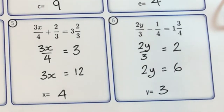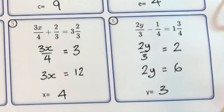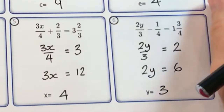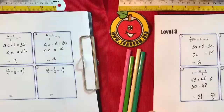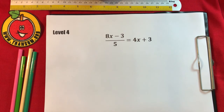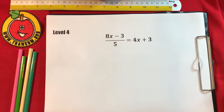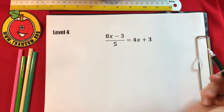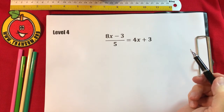Have a go at level 3 — click the check button regularly — then come back for level 4. In level 4 I've just chosen one example because I think you're getting the hang of this now. Let's get rid of that denominator by multiplying both sides by 5.